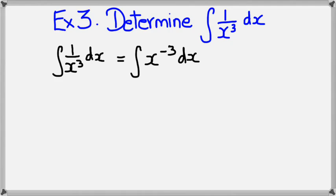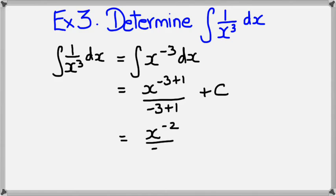And now the usual drill again, add 1 to the power, which means negative 3 plus 1 divided by negative 3 plus 1 as well. And of course, I need the plus c. So simplifying this, I would get x to the power of negative 2 divided by negative 2 plus c.